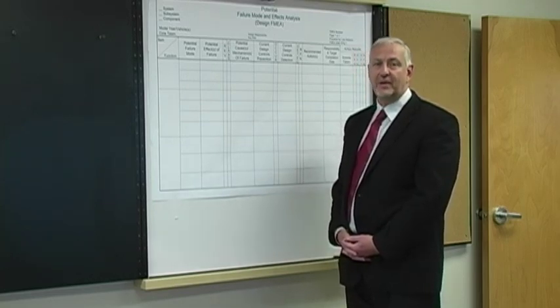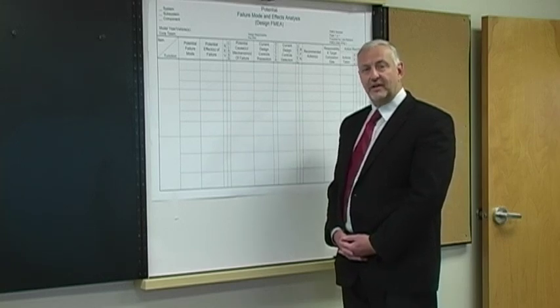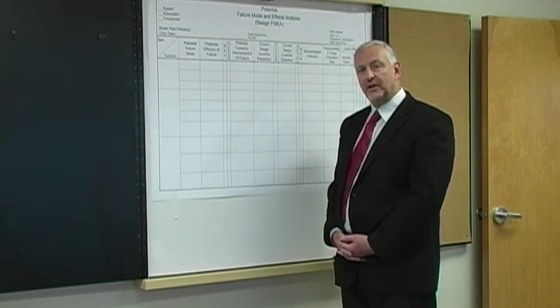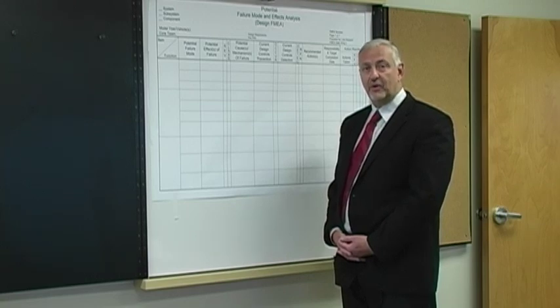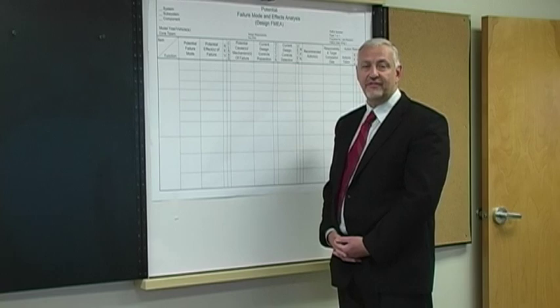The second portion of the FMEA is all about causes, prevention methods, and occurrence. Sometimes when people are looking at this appropriately, they use that second portion to determine special characteristics that might be passed forward from a design FMEA to a process FMEA.